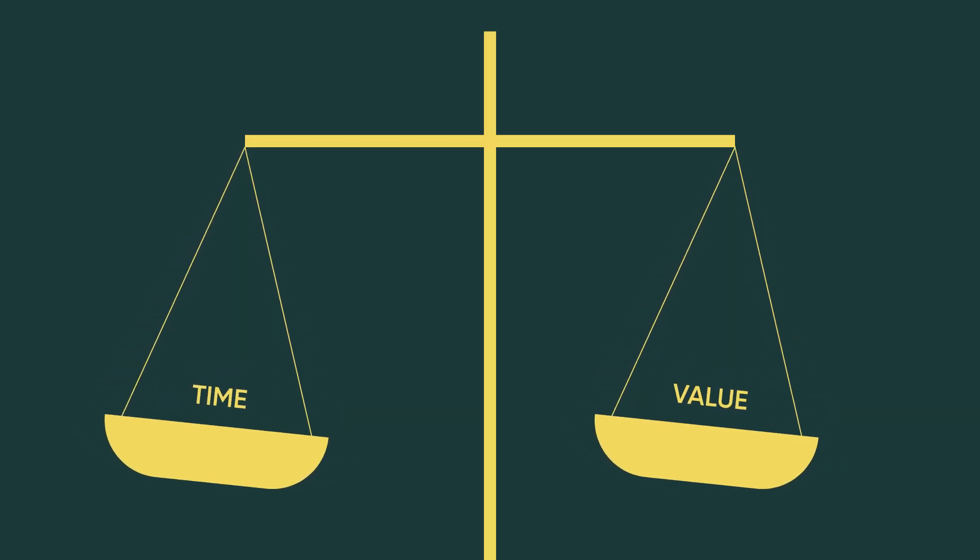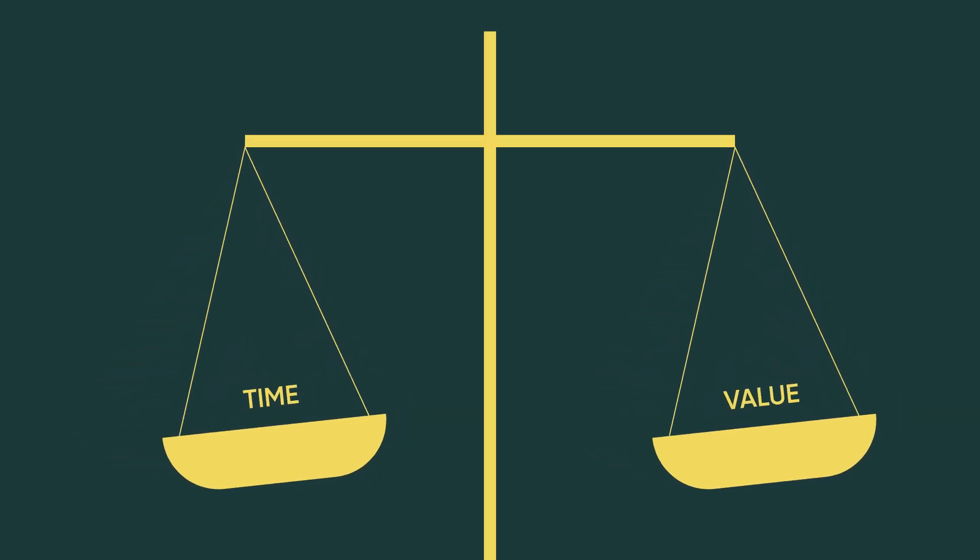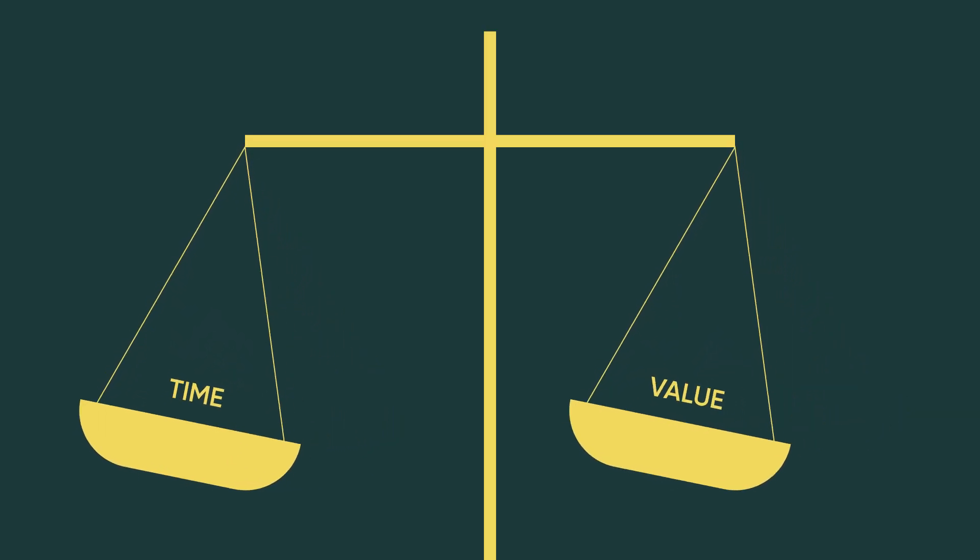Three, time to value balance. Users might not be interested in the checklist unless certain conditions are met. One of these conditions is reassurance that they will get ahead with this user onboarding checklist in an acceptable amount of time — there is a need for time to value balance. If you don't offer to get your users up to speed in a speedy fashion, your checklist is not that attractive.